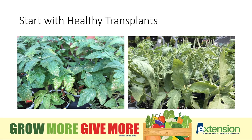The first tip is to make sure you start with healthy transplants. We want to bring nice healthy transplants into the garden and try to avoid introducing any disease from outside sources. When you're buying plants, inspect the leaves, the stems, the whole plant to make sure that you're purchasing a nice healthy plant. Select short stocky plants with dark green foliage with no visible spots. Avoid tall spindly plants or plants with flowers or small fruit. It's important to buy those small to medium sized plants because they're going to become established more quickly than large ones.